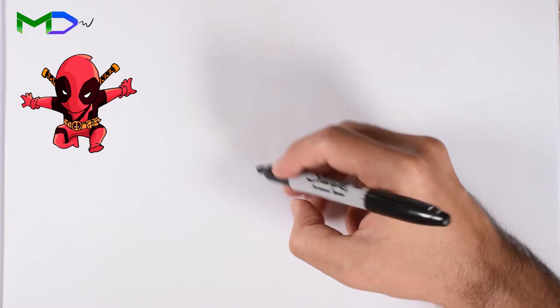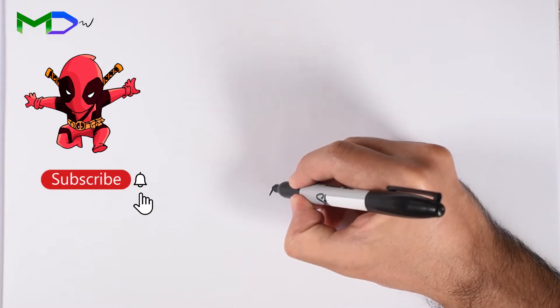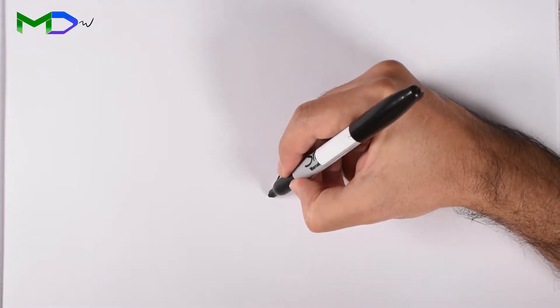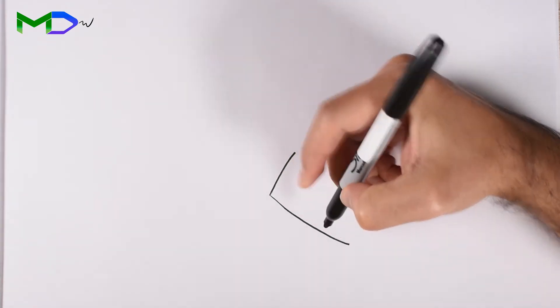Let's go first with Mjolnir. Draw a rectangular shape at the front.